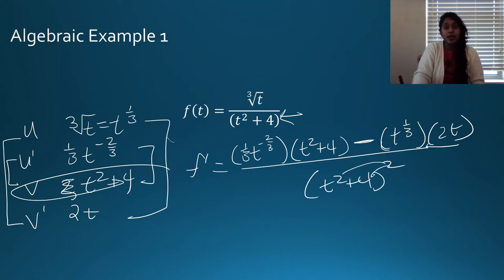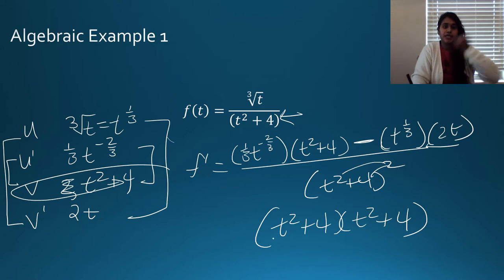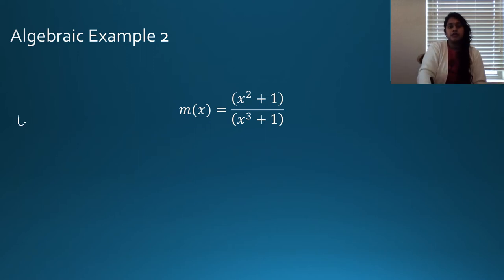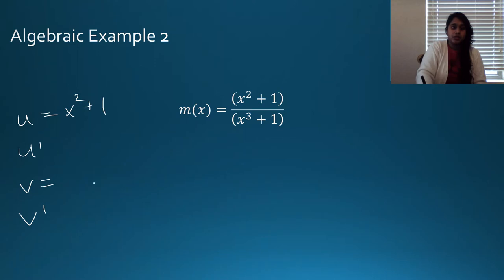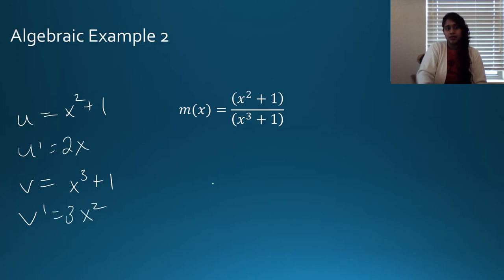Algebra recall: you cannot distribute that exponent over a sum — (t² + 4)² is not t⁴ + 16. Here's another one. u is x squared plus 1, v is x cubed plus 1 — I'll set up the first two and hope you work through it yourself. Pause here and finish this problem, then check your answer against what I write out.